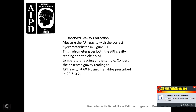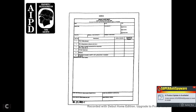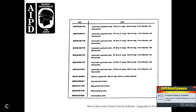For Figure 1-9, observe the gravity correction. Make the API gravity measurement with the correct hydrometer listed in Figure 1-10. The hydrometer gives the API gravity reading observed at the temperature of the sample. Convert the observed API gravity reading to the API gravity at 60 degrees Fahrenheit using the tables prescribed in AR 710-2. This shows the sample ingage gauge sheet, along with the NSNs for the hydrometer, graduated cylinders, cup case replacement thermometers, and water indicating paste.